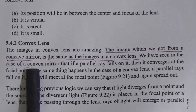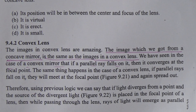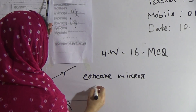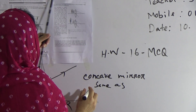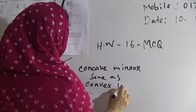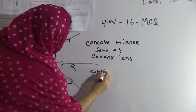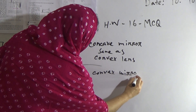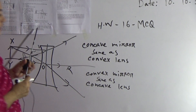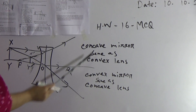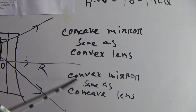The image which we get from a concave mirror is the same as the image of a convex lens. And the image of a convex mirror is the same as a concave lens. Now we will discuss about convex lens.